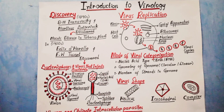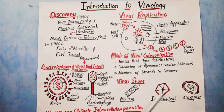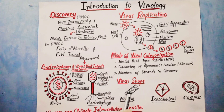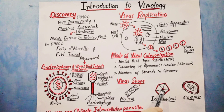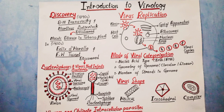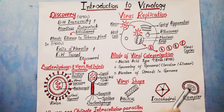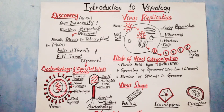Viruses fall into three shapes: helical, icosahedral, and complex. Helical viruses look cylindrical when viewed under an electron microscope and can be short and rigid or long and filamentous. Icosahedral viruses look spherical under an electron microscope. Complex viruses are more complicated and tend to vary in shape. Thanks for watching — subscribe to my channel for more informative videos.